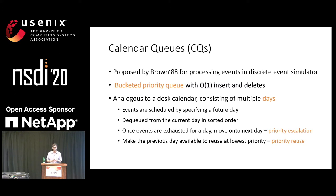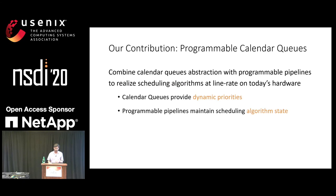Events are scheduled by specifying a future day or date. At any given time, packets from the current day are dequeued and processed in sorted order. Once all events of the current day are dequeued, you move on to the next day, which implicitly escalates the priority of all other days or packets enqueued. We can then make the previous day available — that was just emptied — to reuse at a lower priority. We call this reuse. A key insight in this work is to combine this abstraction of calendar queues, programmable calendar queues, and show how we can realize scheduling algorithms on today's hardware. The calendar queues provide the dynamic properties, and the programmable pipeline maintains the scheduling algorithm state required to compute the rank.